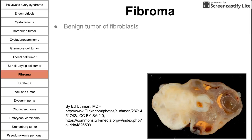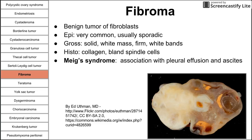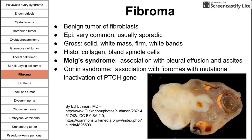Next is fibroma, a benign tumor of fibroblasts that appears sporadically. Grossly, it's a solid white mass that's firm with white bands. Histology shows collagen and bland spindle cells. Two associated syndromes are worth knowing: Meigs' syndrome, which includes pleural effusion and ascites in addition to fibroma; and Gorlin syndrome, which involves inactivation of the PTCH gene and is also associated with fibromas.